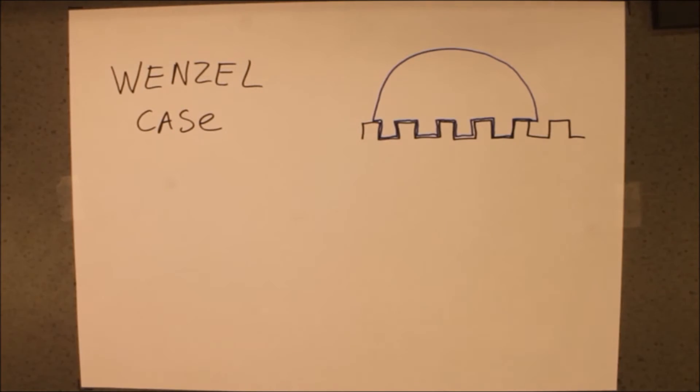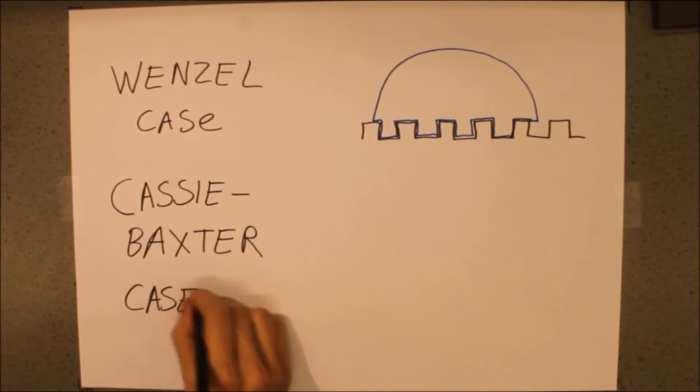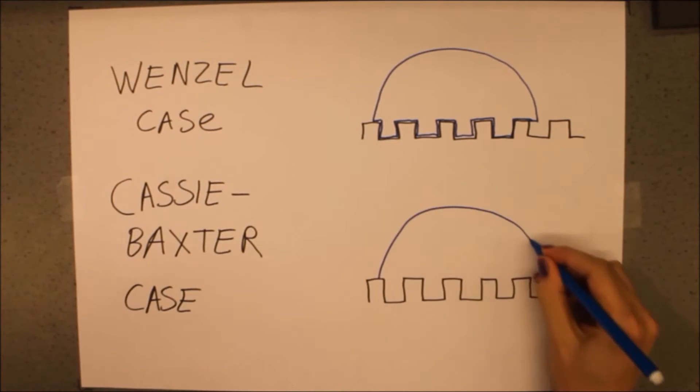In the first case, called the Wenzel case, the droplet fills all the space between the roughness of the solid. In the second case, called the Cassie-Baxter case, this doesn't happen. The droplet just lies on top of the roughness.